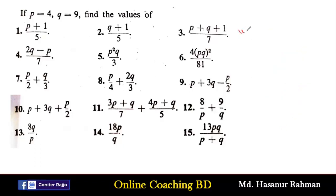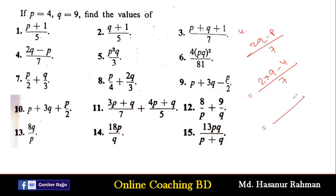Very simple. Now number 4 says (2q−p)/7. Instead of q we put the value: 2 multiplied by 9 minus 4, divided by 7. So 2×9 is 18, minus 4 by 7 — 18 minus 4 is 14 divided by 7, so the answer is 2.